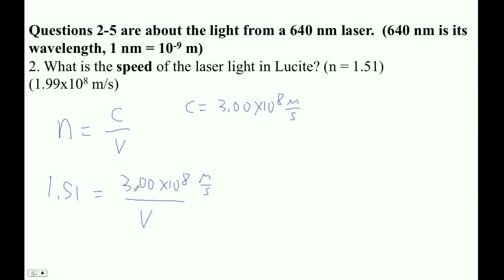Now basically, you know it's going to be this divided by this, because it can't be faster than the speed of light - that's the fastest speed there is. So 3 times 10 to the 8 divided by 1.51.